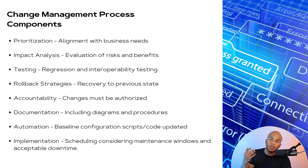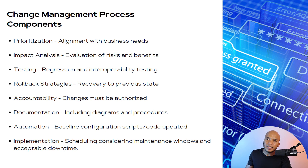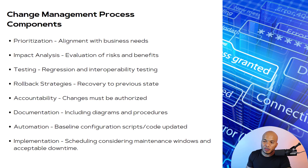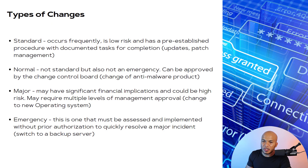Documentation, including diagrams and procedures, is also essential. You want to make sure the change is well documented because, for example, the following year you might have a different IT team. If there's a problem, the new team should be able to look back and see what the previous team actually did, then make the necessary changes. There's also automation — baseline configuration scripts and code will be updated. And then the actual implementation, considering maintenance windows and acceptable downtime.